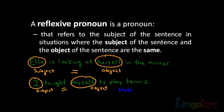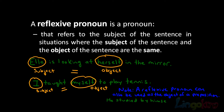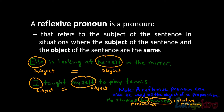Note: a reflexive pronoun can also be used as the object of a preposition. In the sentence 'he studied by himself,' the reflexive pronoun himself comes after the preposition by. Also, there's another use of reflexive pronouns, but we're focusing on the basics in this episode.